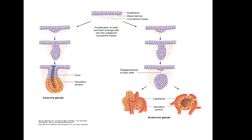This diagram has been taken from Basic Histology: Text and Atlas, 12th edition by Junqueira. Here we find the development of exocrine as well as endocrine glands. The picture shows that the development proceeds in a similar manner, but one ends up with a duct and the other is ductless.